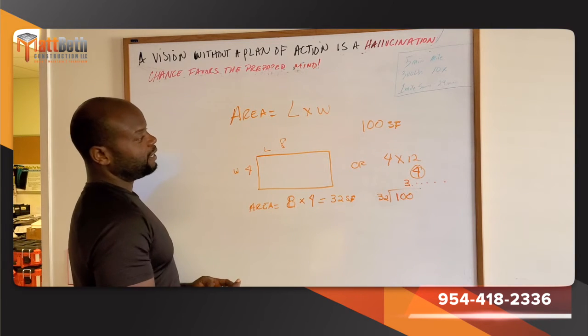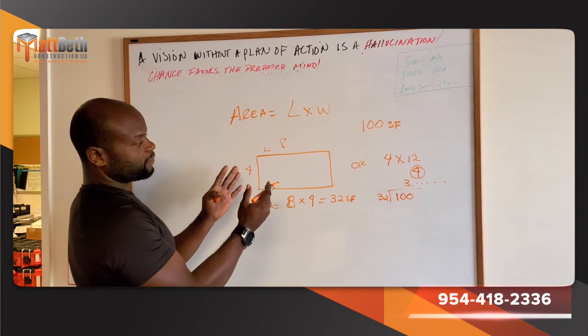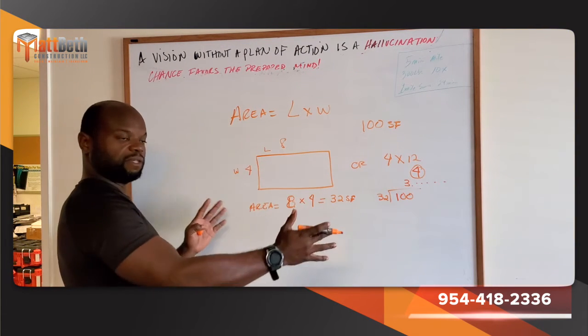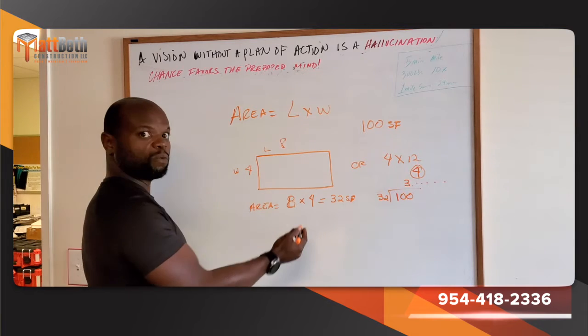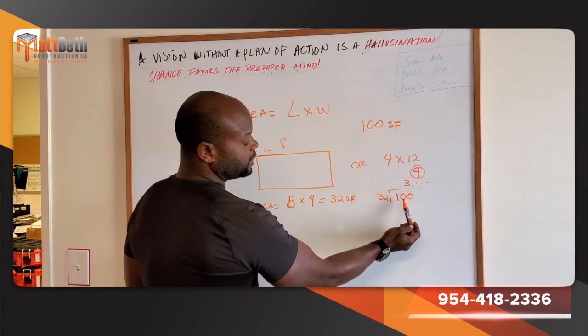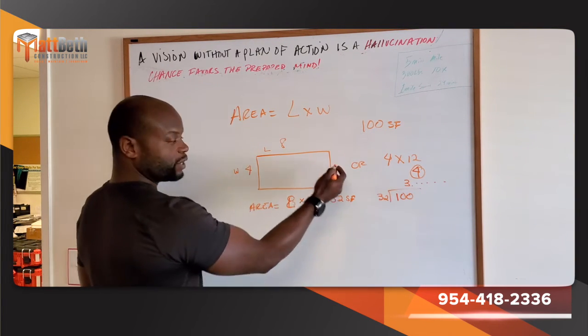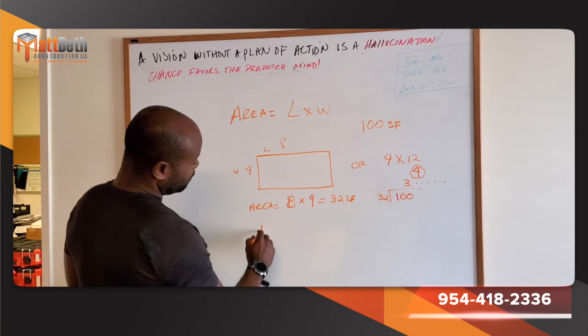So, when you're estimating and the wall has 100 square feet and you have 4 by 8 drywall, you know you need 4 pieces of drywall because you need 3 whole ones plus a little bit.